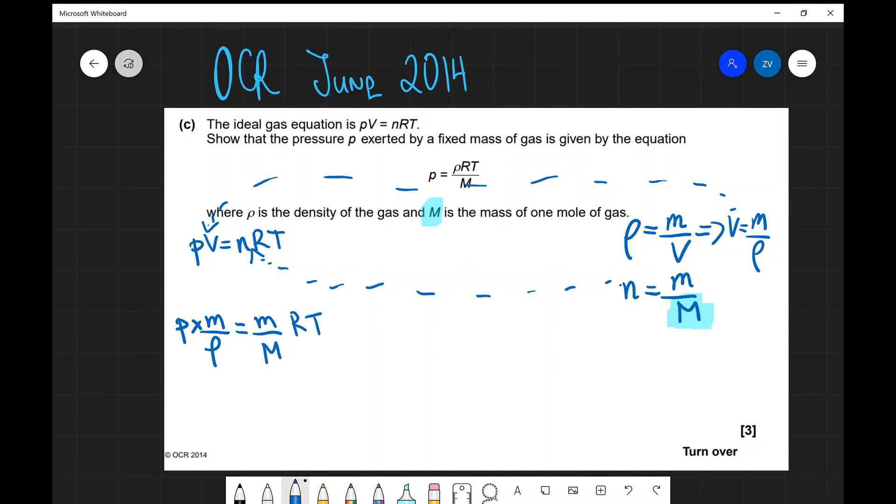I can do some cancellations. I'm going to cancel all those M's, and I'm just going to rearrange this for the pressure P by multiplying everything by the density. This is going to give you P equals density times R times T divided by M.